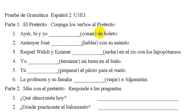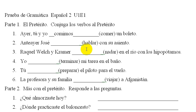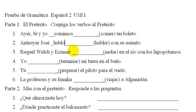The whole thing is preterite, so we know that. Let's start at the top. Here we have el pretérito — conjugue los verbos, el pretérito — conjugate the verbs to the preterite. So we have yesterday, you and I, so that's nosotros. Comimos un boleto. Dos, anteayer, José habló con su asiento. Keep in mind, the accent mark here is very important. Without the accent mark, it becomes hablo, which means I speak. So we want to make sure you have the accent mark there.